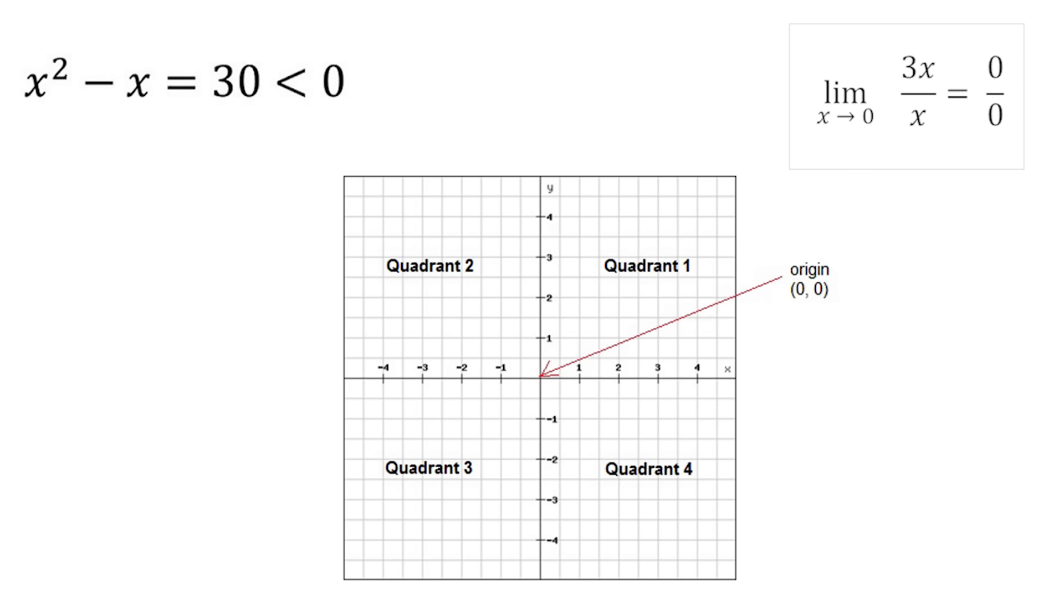In geometry, the zero constant is used to represent the origin of a coordinate system, or the absence of length, area, or volume. And in physics, the zero constant is used to represent the absence of a physical quantity, such as temperature, energy, or potential.